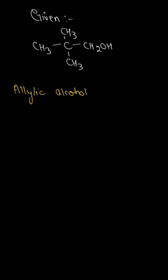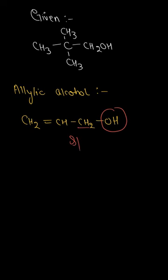So basically, what is allylic alcohol? It has a structural formula of the type CH2 double bond CH-CH2-OH. Or we can say in other words that the alcoholic group, that is the OH group, is attached to sp2 hybridized carbon next to a carbon-carbon double bond.